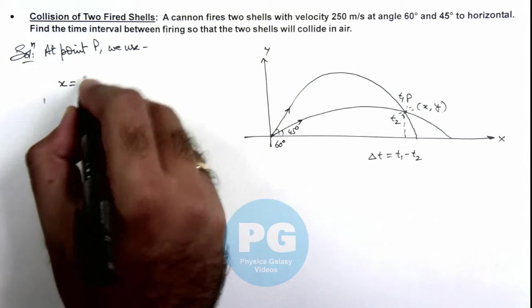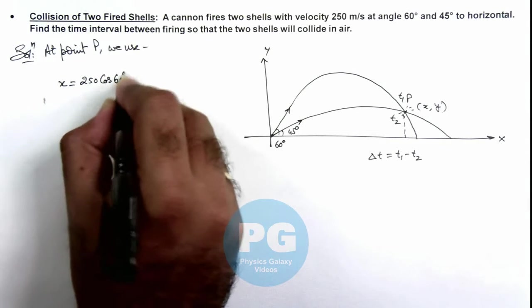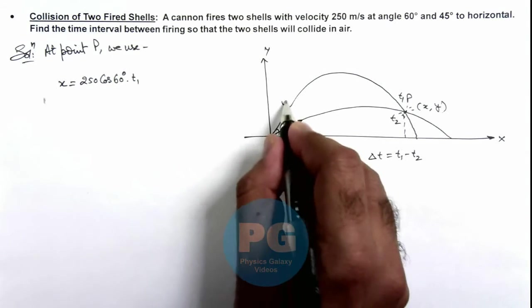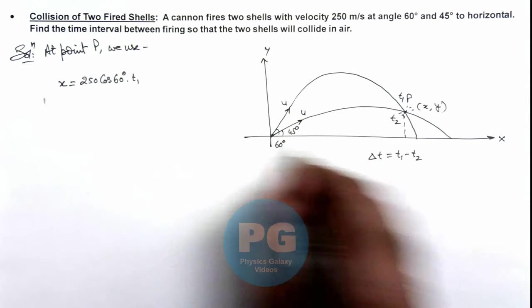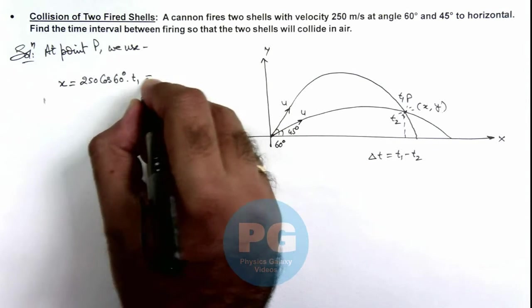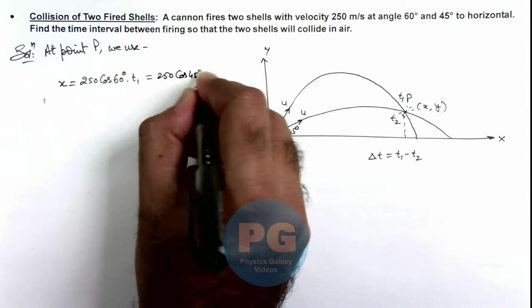So here we can write x = 250 cos 60° × t₁, which is the horizontal component of velocity of the projectile thrown at angle 60 degrees. The same can be written as 250 cos 45° × t₂.